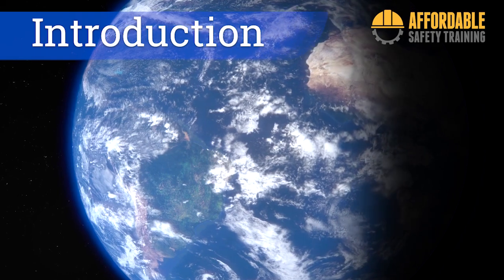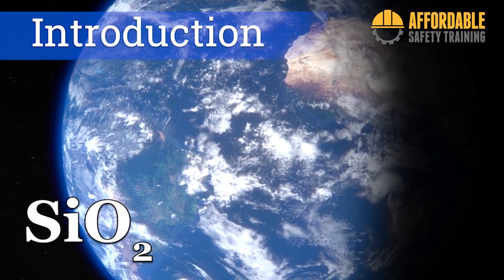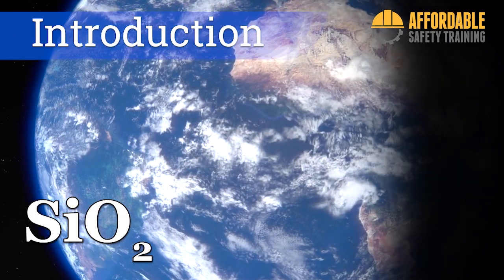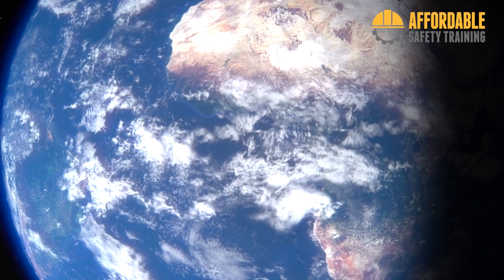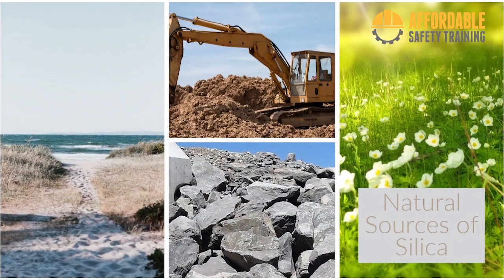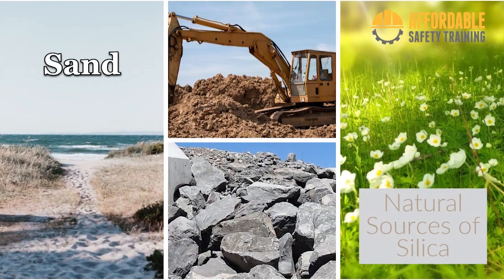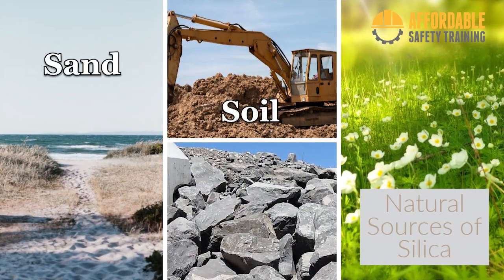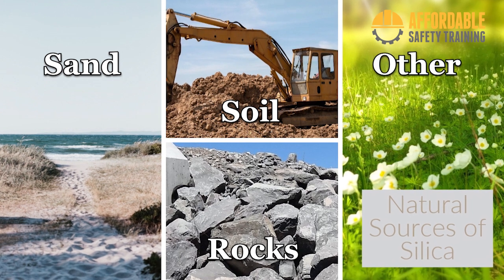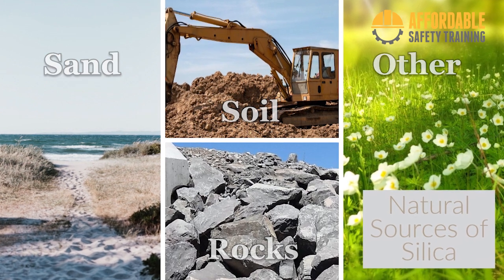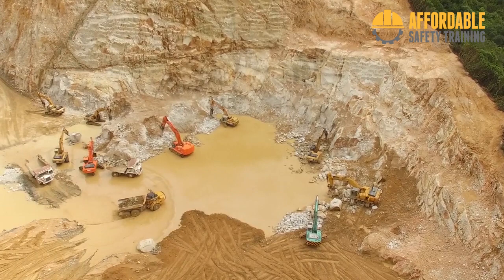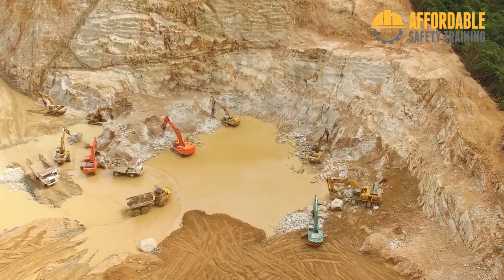Silicon dioxide, commonly known as silica, comprises more than 10% of the mass of the Earth's crust. Silica is found in sand, soil, rocks, and many other naturally occurring materials. In its normal form, it is usually not hazardous.